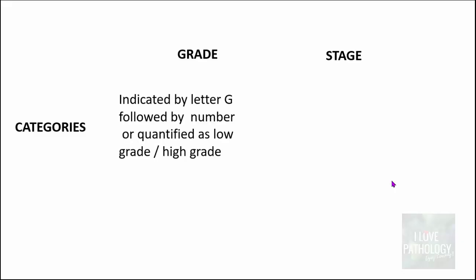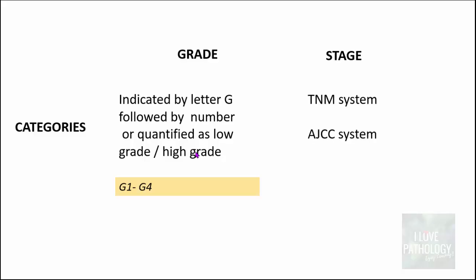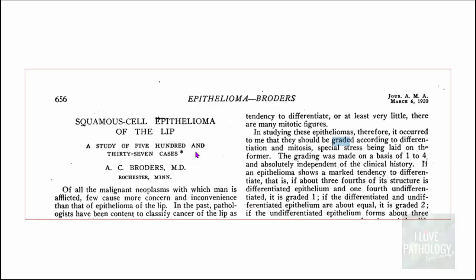There are different categories of grades and stages. Grading is indicated by the letter G followed by a number, or quantified as either low grade or high grade. If followed by a number, it is G1 to G4. The most common staging system uses the TNM system, which we will be discussing in great detail.